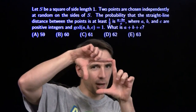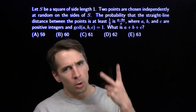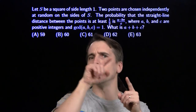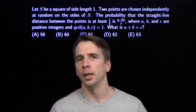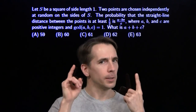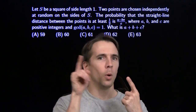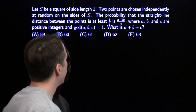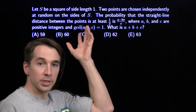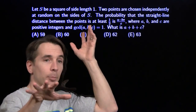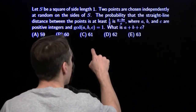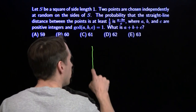We're going to start with a square, side length 1. We're going to choose two points at random on the perimeter of that square. We want the probability that those two points are at least 1/2 apart. The probability is going to have this form. We're not going to worry about the rest of this until we find that probability. We're going to start finding that probability by drawing the square.